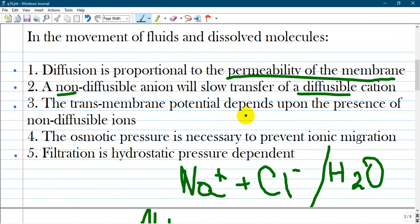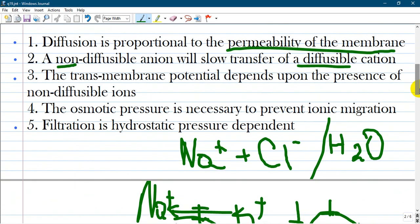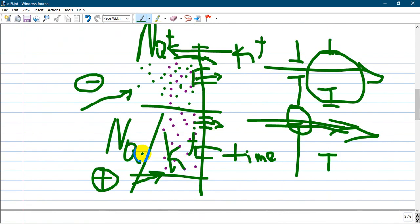The transmembrane potential depends upon the presence of non-diffusible ions. As you know, ions that do not pass through the membrane save a potential gradient and water will come back.